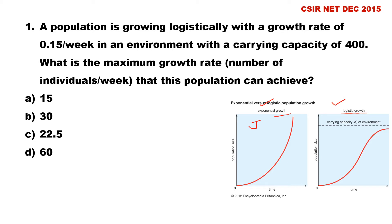In the real world, population resources are limited. When resources are limited, population shows logistic growth. In logistic growth, population growth decreases as resources become scarce, and that will produce an S-shaped curve. Here you can see the carrying capacity — the population will not grow beyond a particular size, called carrying capacity, which is the amount of organisms within a region that the environment can support. After reaching carrying capacity, population size becomes stable.